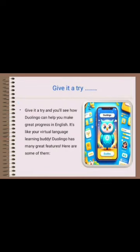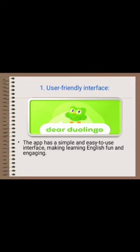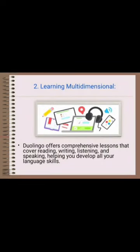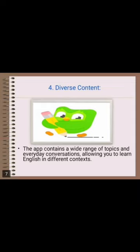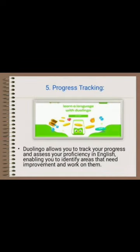Give Duolingo a try and you will see how it can help you make great progress in English. Duolingo offers comprehensive lessons covering reading, writing, listening, and speaking, helping you develop all your language skills. The app also contains a wide range of topics and everyday conversations, allowing you to learn English in different contexts. Duolingo allows you to track your progress and assess your proficiency in English, identifying areas that need improvement.